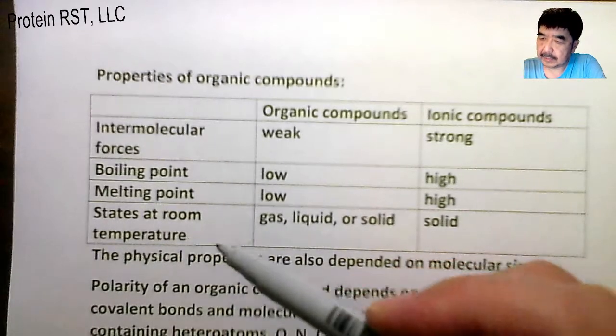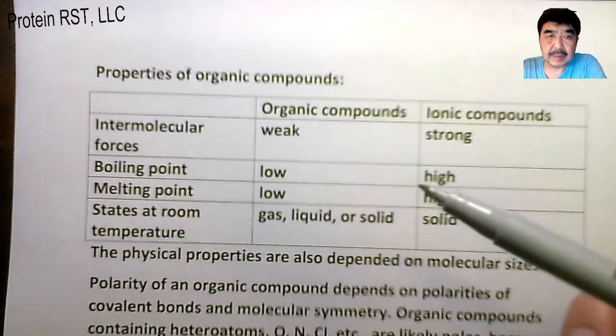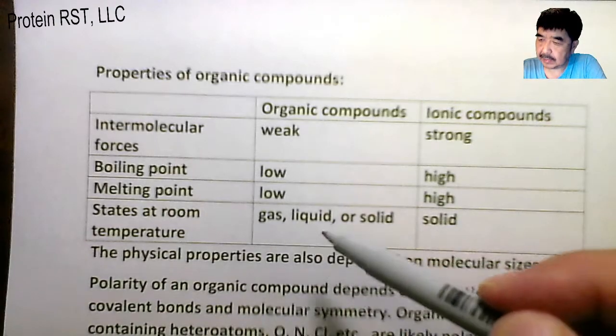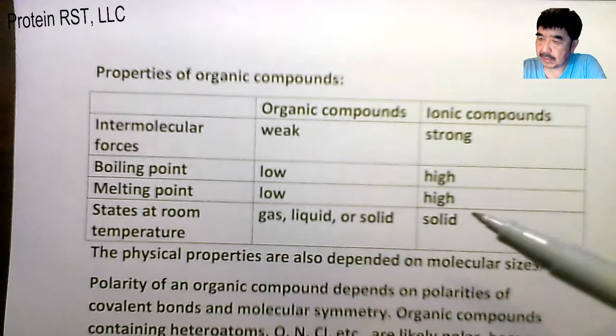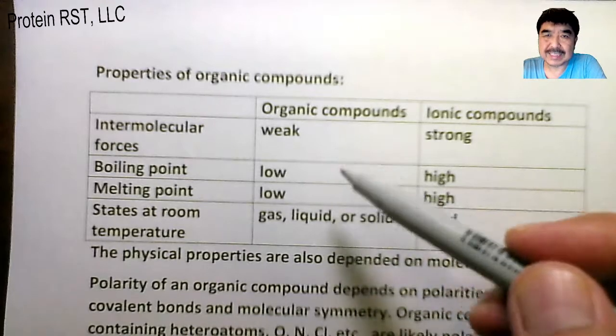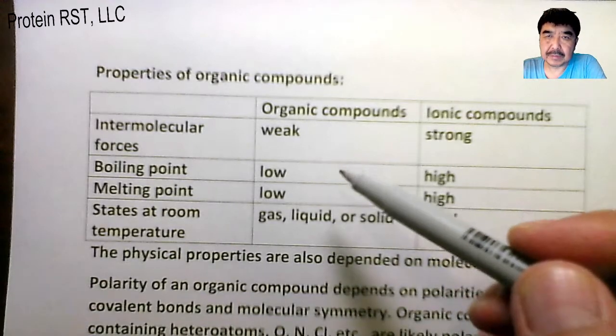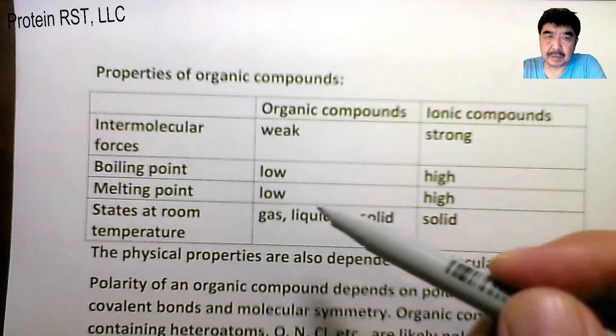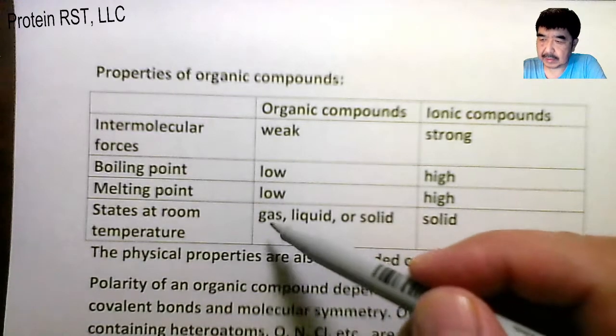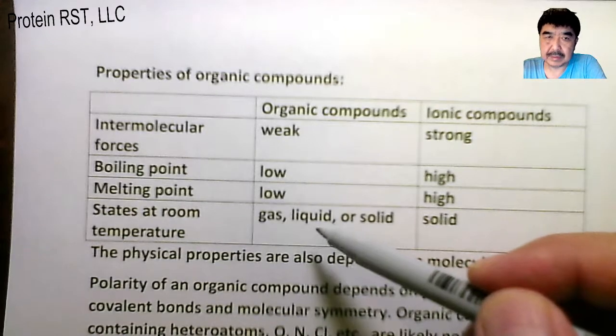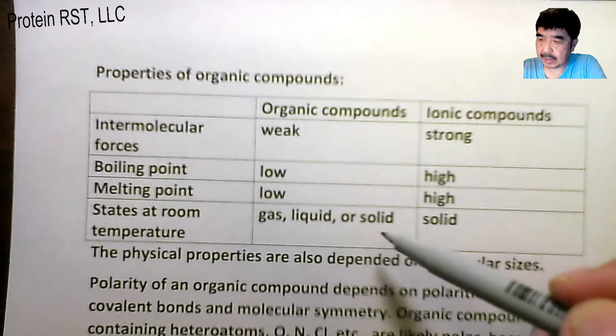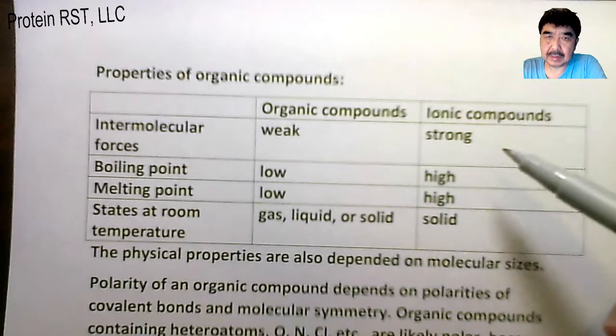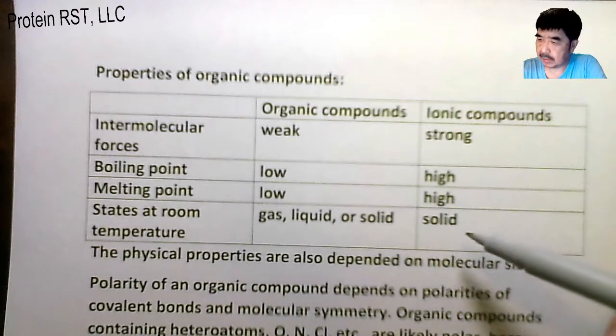The states at room temperature - organic compounds can be either gas, liquid, or solid. This depends on the size of the compound. Smaller molecules are in gas state, medium size in liquid, and larger molecules are solid. Ionic compounds are in solid state.